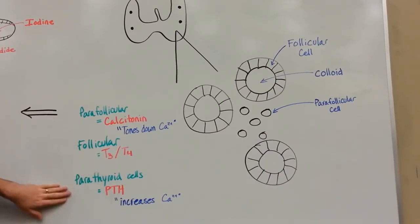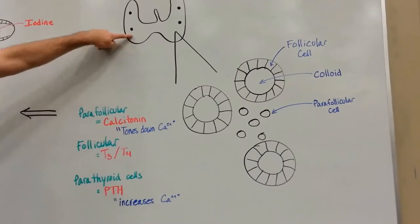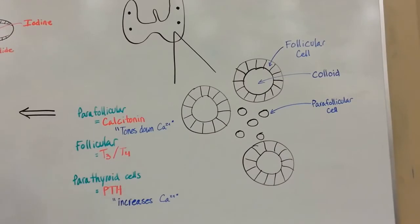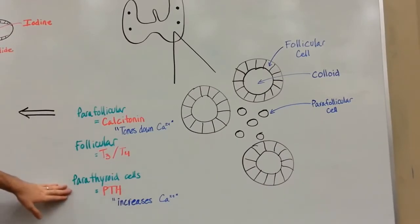Lastly, we've got the parathyroid cells. Those are going to be the cells inside your parathyroid glands. You've got four of them, two superior, two inferior. These parathyroid cells secrete parathyroid hormone, happily named.